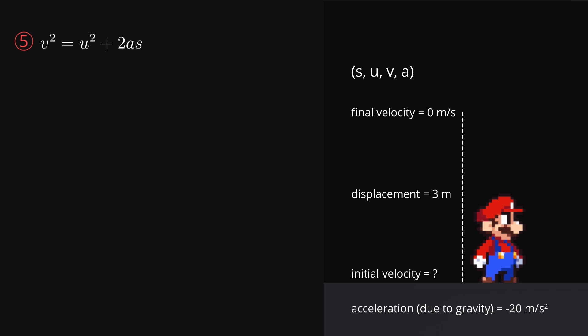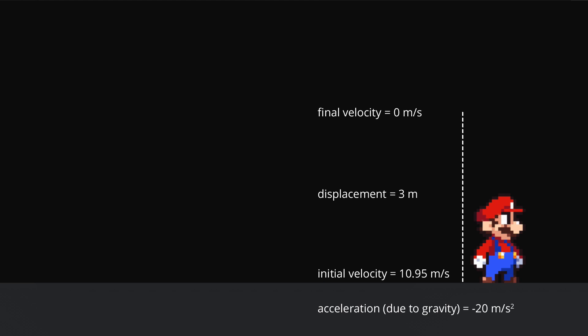We're trying to find initial velocity, so let's rearrange this equation with initial velocity isolated on the left-hand side. We can then substitute in the values we know to get u squared equals 120. We then simply take the square root of both sides to get u equals about 10.95. Now that we know the initial velocity, we can make the character jump the height we wanted.